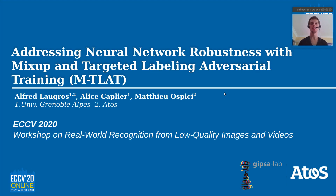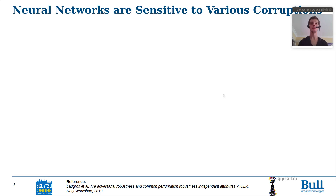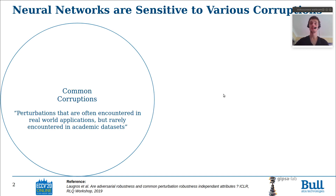So first, let's define the problem. Neural networks are known to be sensitive to corruptions. They are sensitive to common corruptions. Common corruptions are all the perturbations that are often encountered in real-world applications but rarely present in academic datasets.